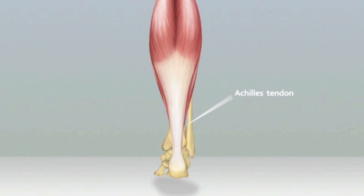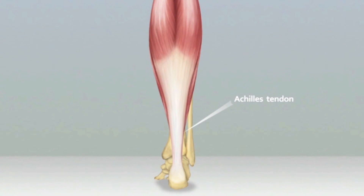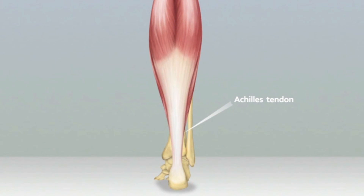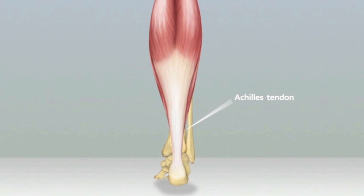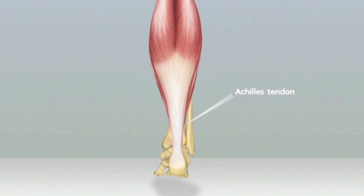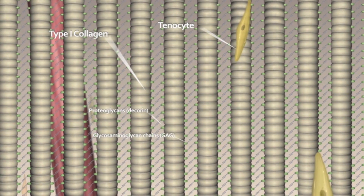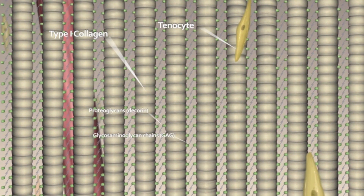The Achilles tendon is a viscoelastic tissue, deforming up to 10% of its length during high load activities such as running and jumping. The Achilles tendon stores and releases energy as part of an energy saving mechanism. We will now look at the key components of the tendon at a cellular level, beginning with the tenocytes, which produce the important contents of the extracellular matrix, including the collagen fibrils and the proteoglycans.